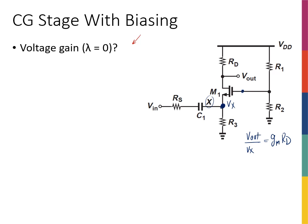You might think that having R1 and R2 instead of a fixed V_bias changes things, but from the AC perspective it doesn't matter. R1 and R2 form a resistive divider that generates a DC voltage at the gate, so in AC analysis what we have at the gate is simply a DC voltage, which connects to ground. So this circuit is no different from what we've already discussed in AC terms. We know Vout over VX equals gm*RD.